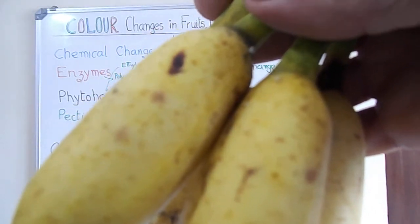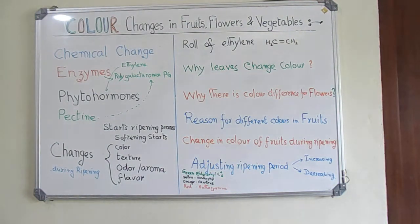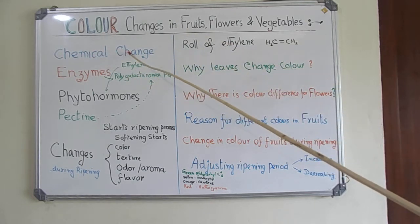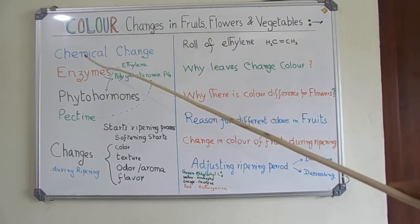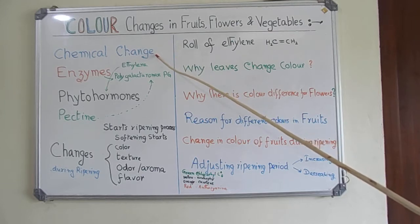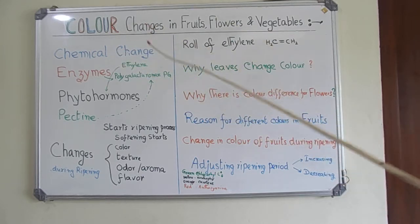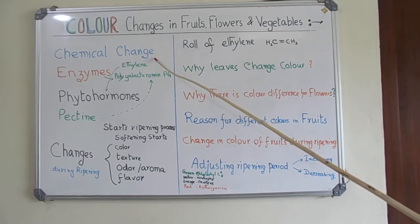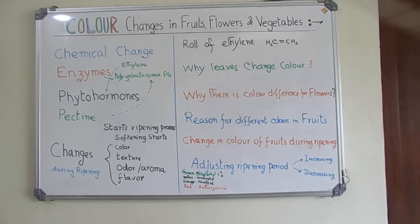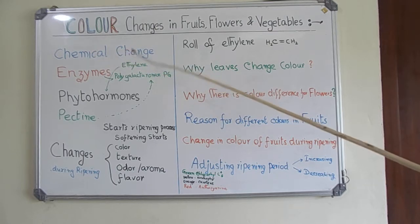The texture of the pectin is changed. What type of chemical change is taking place? It is irreversible — you cannot make a fruit back into the original. The soft, tasty, sweet fruit will not be converted back to the original raw material. The chemical change is permanent.